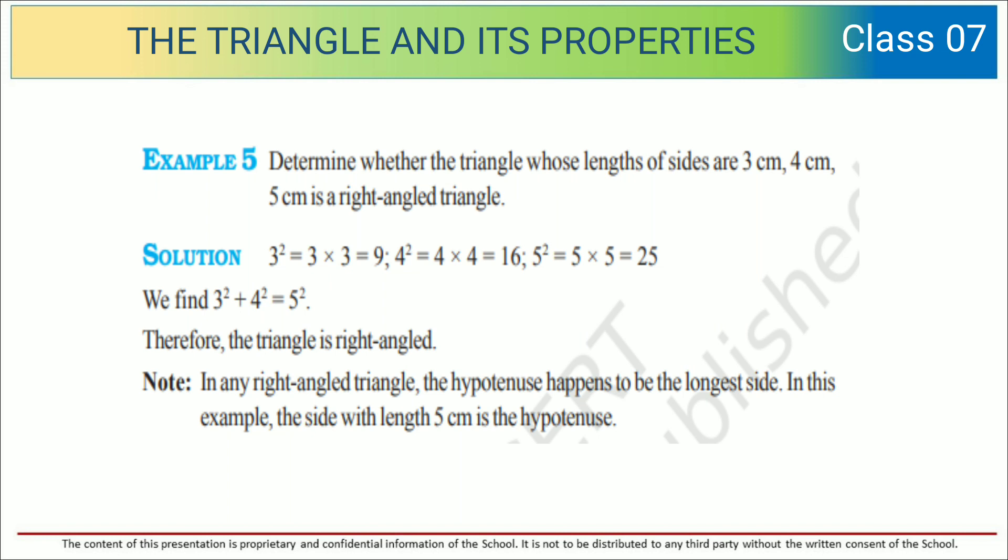For this, we can find the squares of each number. 3 squared, which is 3 into 3, is 9. 4 squared, 4 into 4, is 16. 5 squared, 5 into 5, is 25. We find 3² + 4² = 5².